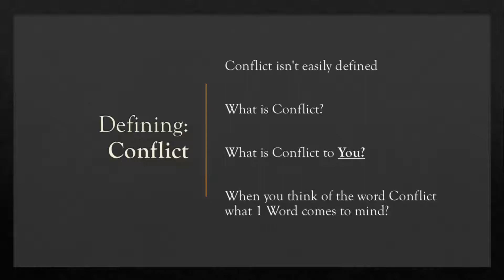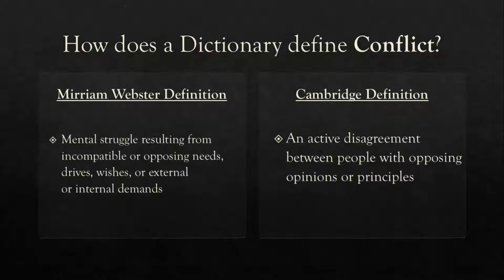Conflict as defined by the dictionary is as follows. From Merriam-Webster: 'Mental struggle resulting from incompatible or opposing needs, drives, wishes, or external or internal demands.' And from Cambridge: 'An act of disagreement between people with opposing opinions or principles.' Now, while these are pretty decent definitions of conflict, everyone defines conflict differently because conflict is defined by your experiences with it, and everyone has their own unique experiences in conflict.